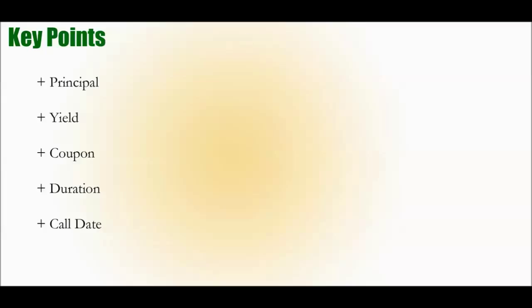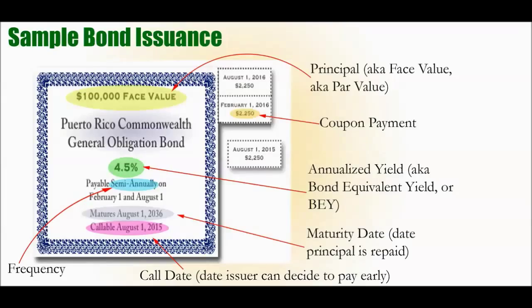Now, to define these terms and put them in context, let's take a look at a sample bond issuance. On the screen right now, courtesy of DavidLerner.com, you can see the Puerto Rico Commonwealth General Obligation Bond. This is a bond issued by the government of Puerto Rico — a sample bond so we can analyze its components and see what that means for prospective bond investors.